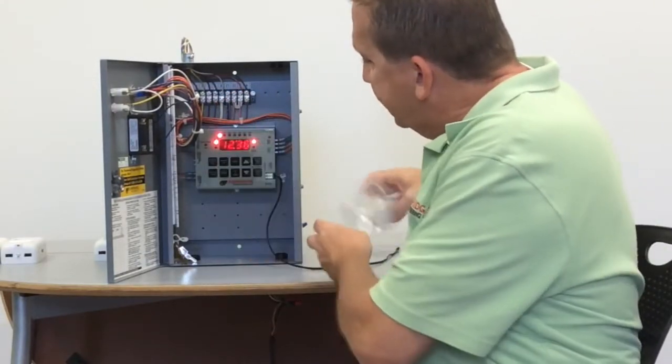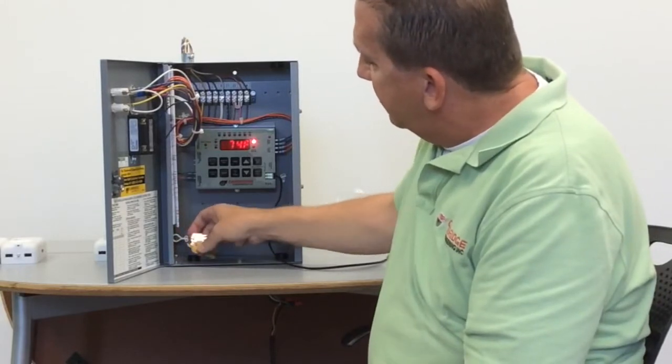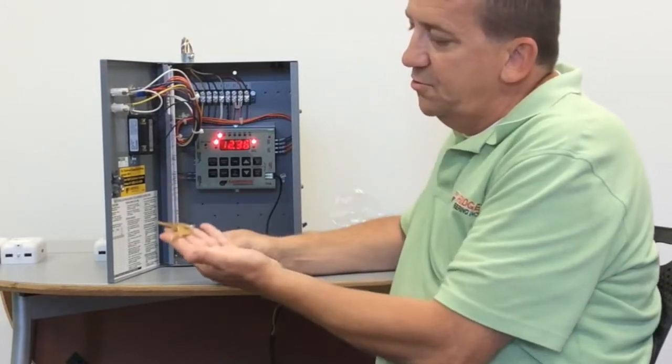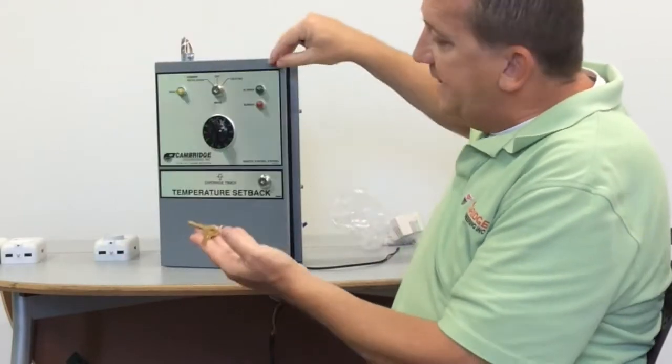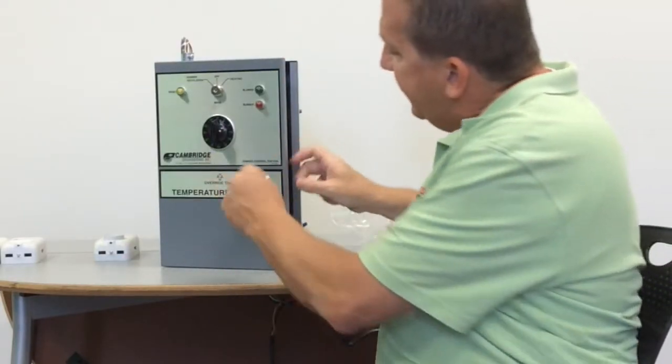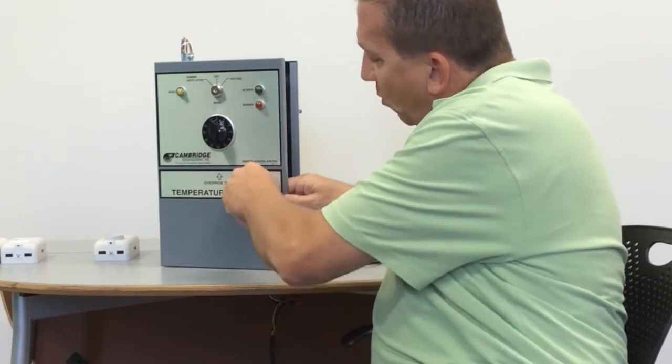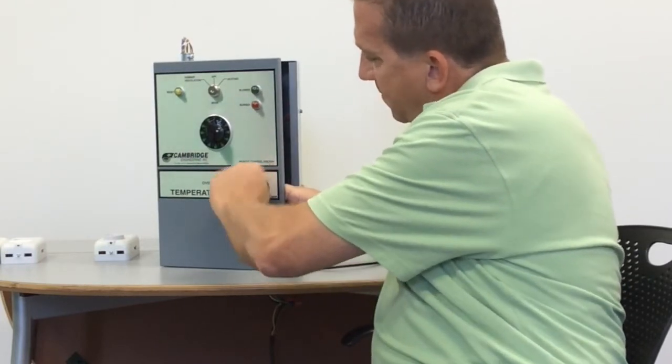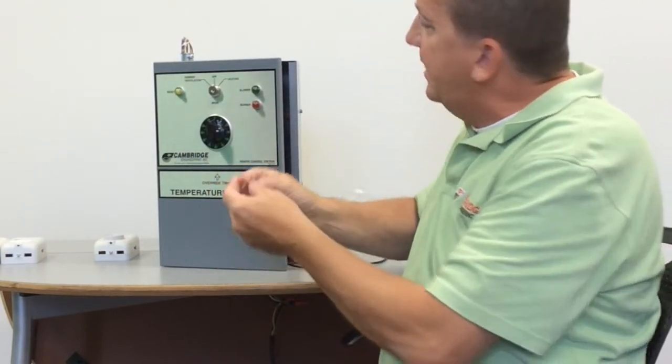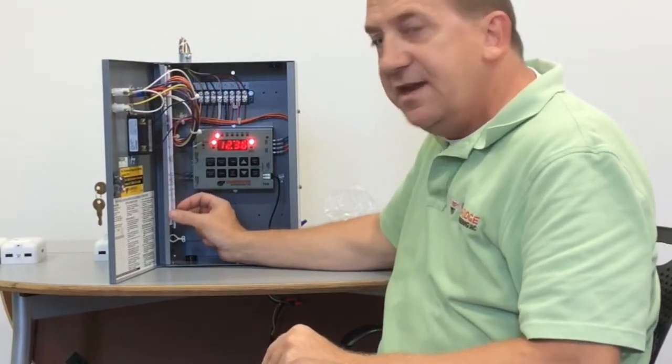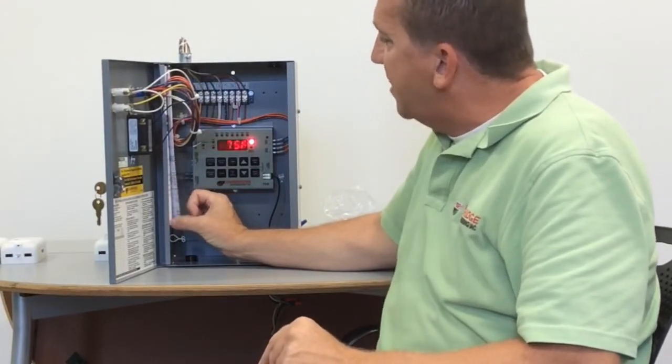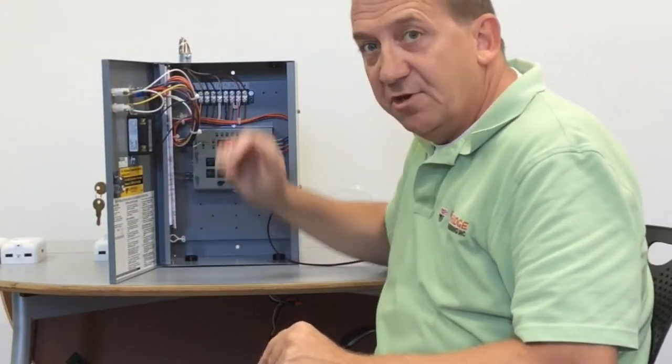Now also inside of here, there are your keys. The heater ships with two brass keys and two silver keys. What these keys are for is the brass key operates the door lock, and then the silver key operates the mode switch. And also inside this panel, when it ships brand new, there will be an actual schematic of the heater and a technical manual that discusses the operation of this thermostat.